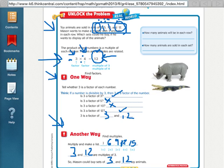So, for example, if it's asking us what are the common multiples of 3 and 4, you're just going to list the multiples. So, 3, 6, 9, 12, 15, 18.